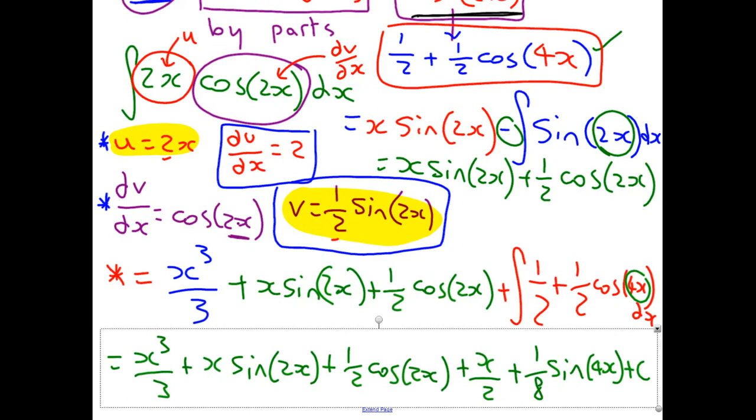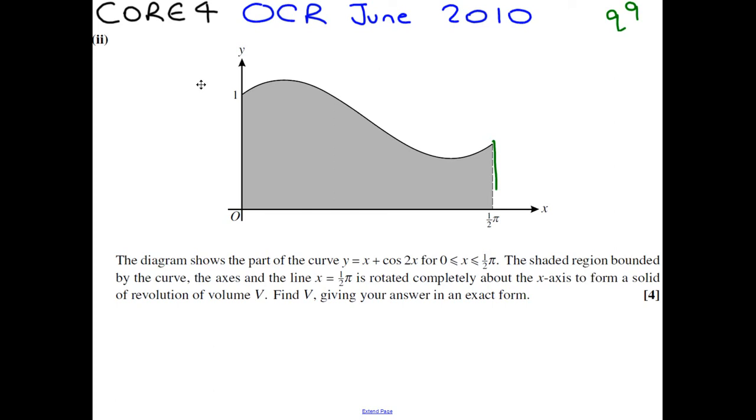Moving on to part 2. I've just copied the answer because I know that we are going to need it in a minute. If we read the question, the diagram shows part of the curve y equals x plus cos 2x. And it goes, as you can see, between 0 and pi over 2. The shaded region is bounded by the curve and the x-axis and the line that x equals 1 half pi. It is rotated completely around the x-axis. So it's spun around this way, around this axis, to form a solid of revolution of volume V.